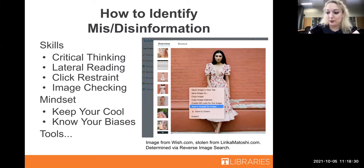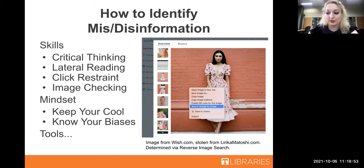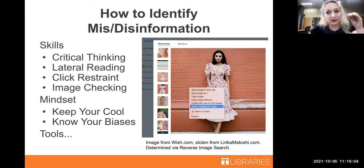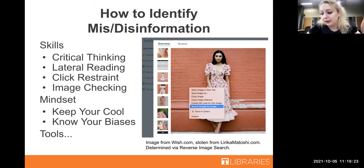Always approach any claim with the intention of gathering more information to see if you can back it up. Keep a healthy dose of skepticism - I'm not telling you to always be cynical, but being cautious or cautiously optimistic until information has been verified is a good move. You're also going to want to engage in lateral reading. Aside from critical thinking, this is the most powerful weapon in your arsenal. Lateral reading means getting off the page or website you're looking at and checking it against other sources - if you're looking at something in the New York Times, go to other newspapers to double-check. This also means investigating the company, author, or site's publisher, and searching for these people in Google to see what other sources have to say.